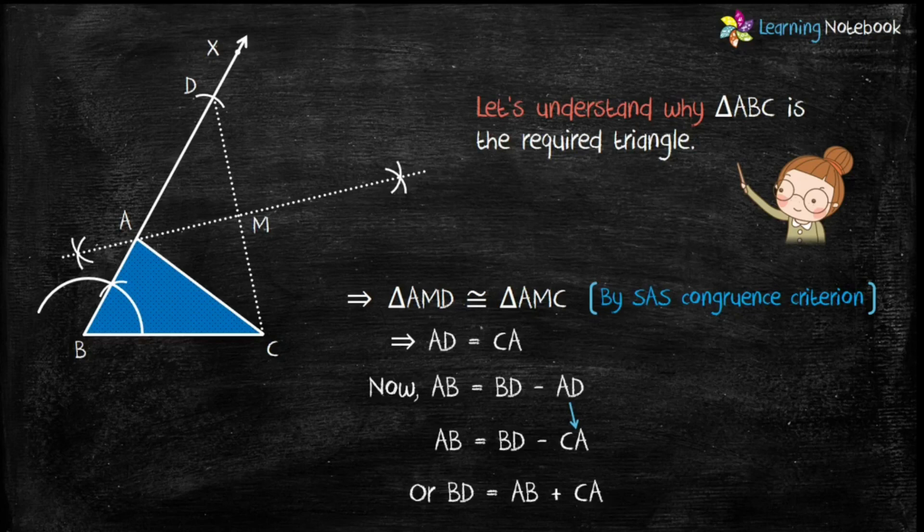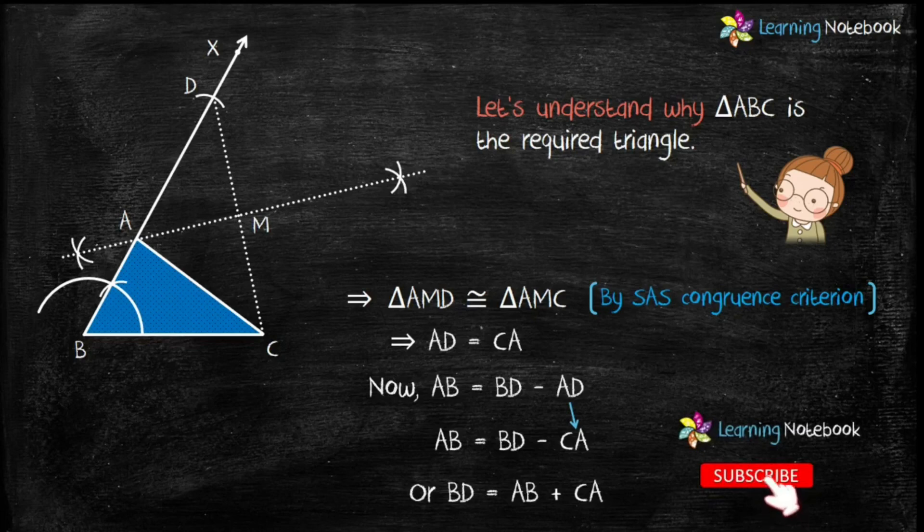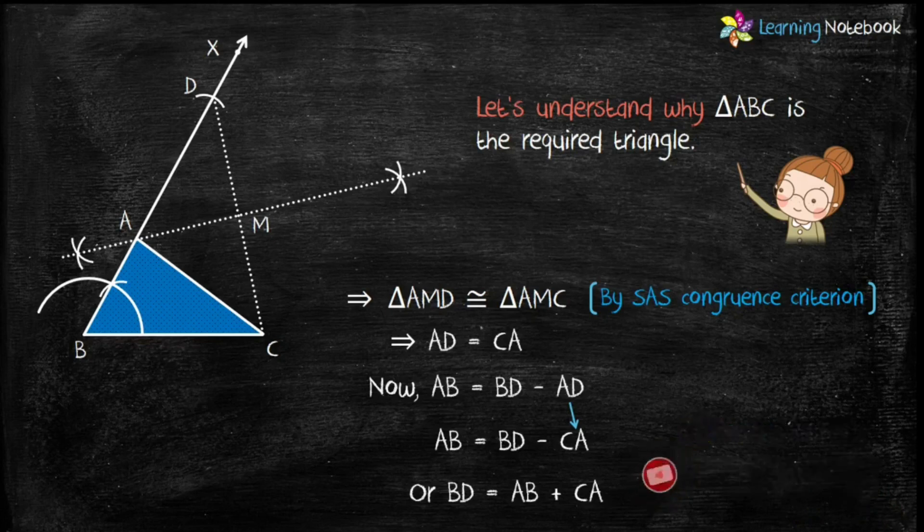So students, this was the alternate method to construct a triangle when base, base angle, and sum of other two sides are given. Thanks for watching. If you enjoyed this video, then do hit the like button. Don't forget to subscribe to our channel, Learning Notebook. And make sure to press the bell icon. Thank you. Bye-bye. See you in the next video.